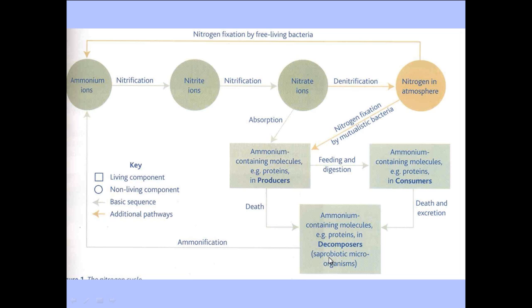Saprobiotic digestion is a very specific type of digestion. Unlike animals, which have a very sophisticated digestive system, bacteria are quite simple organisms and do not have the same level of sophistication. What they have to do is find a way to break food down without the aid of a digestive system. What they do is secrete enzymes onto dead material, and those enzymes break down the ammonium containing molecules or proteins found within living things into small enough parts to be absorbed by the bacteria.